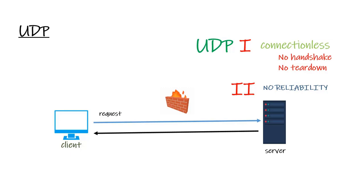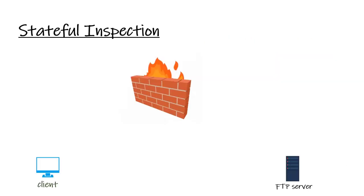In video streaming or online gaming, if a packet is lost you don't want to wait for the correct sequence number — by then the picture has already changed. With UDP, if you get a bad pixel on screen, you don't wait for the right one because you need speed over reliability. UDP is fast; it's not reliable, but that's acceptable when efficiency matters. Stateful inspection technology was invented by Checkpoint and is used by approximately 95% of vendors on the market today.